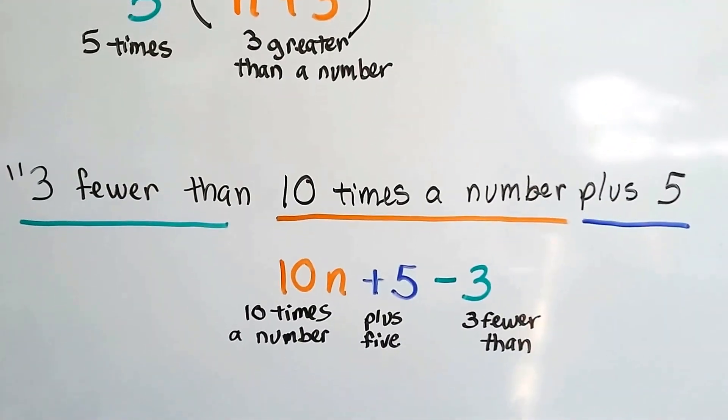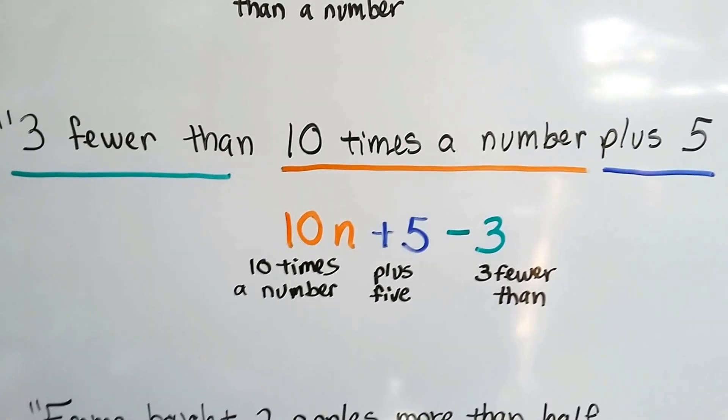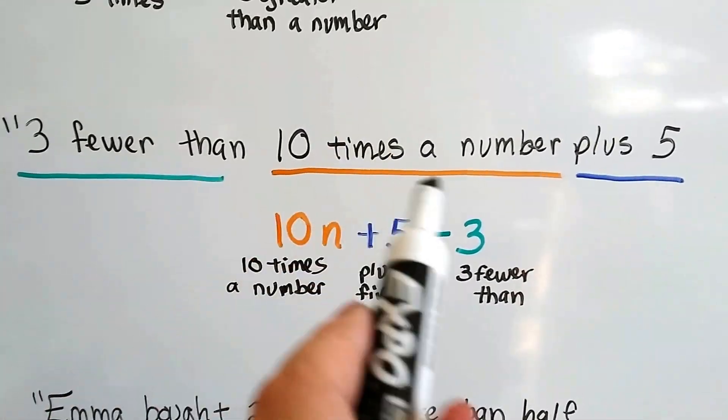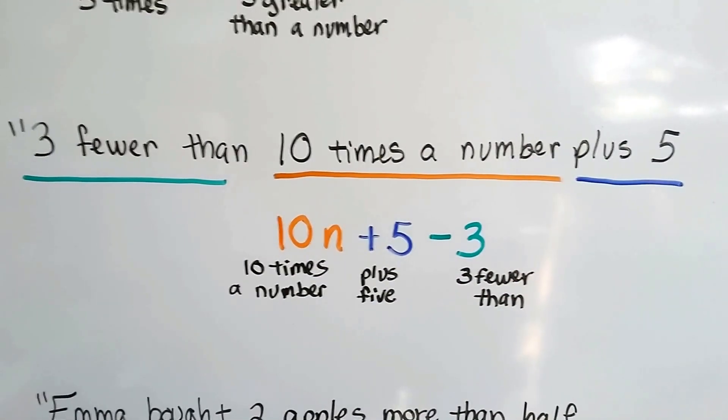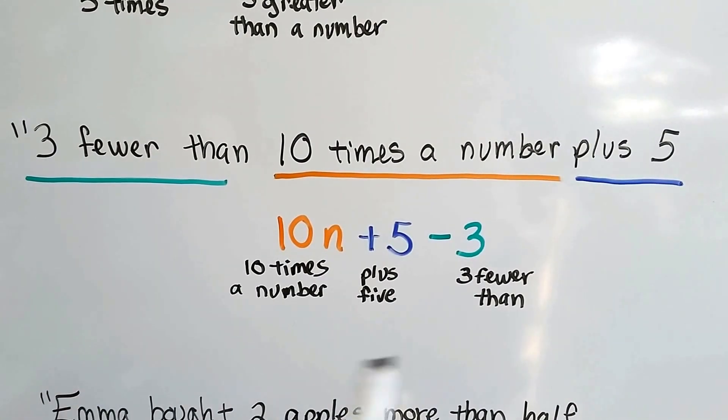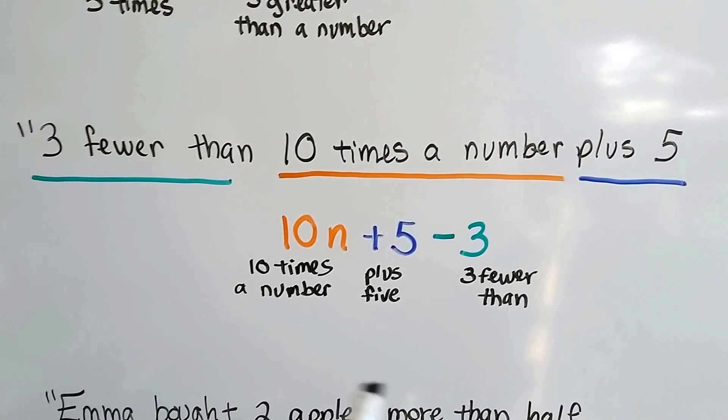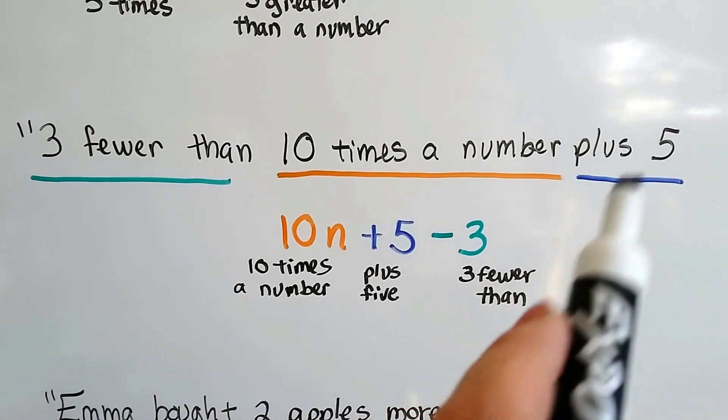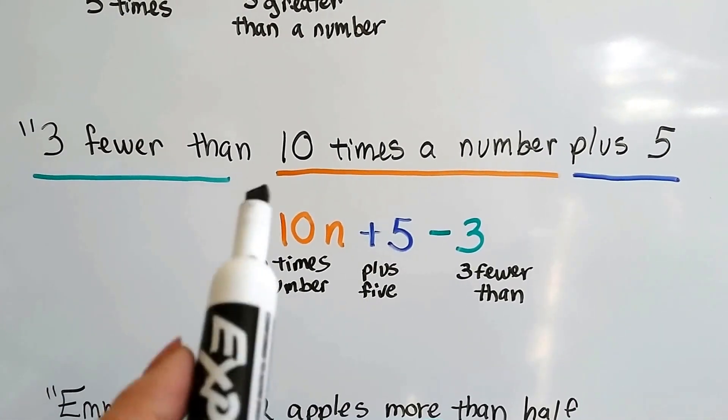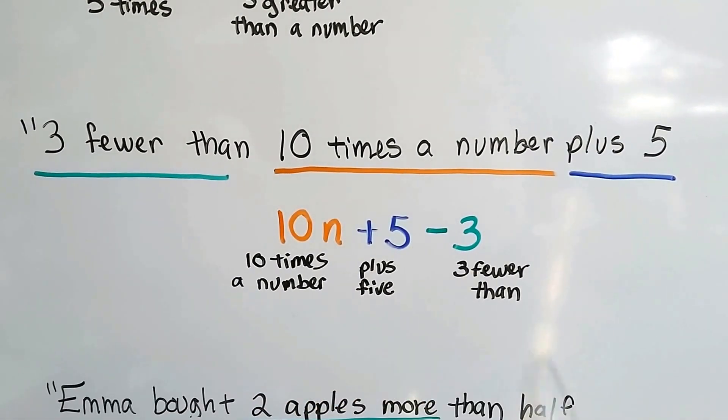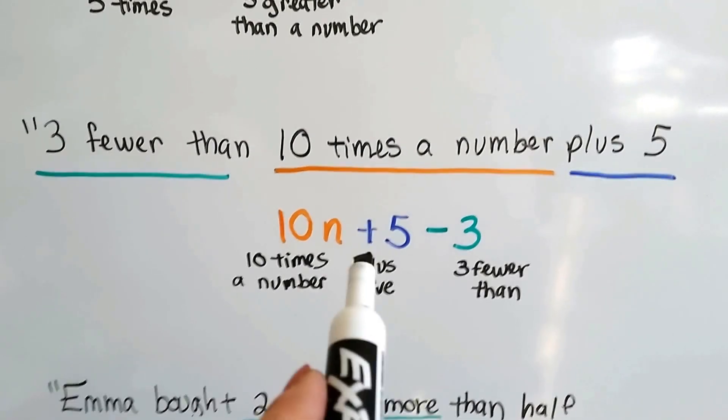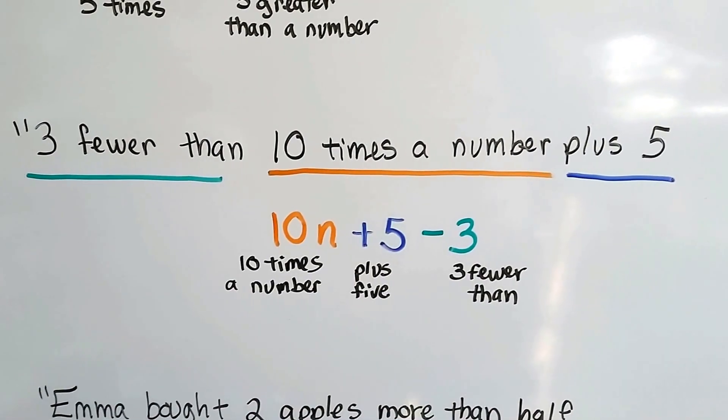If it says three fewer than ten times a number plus five, now it can be split into three parts. We've got three fewer than, so that's going to be subtracting three. Ten times a number would be ten n, and the plus five would be the plus five. So we'd have ten n plus five minus three. We could combine like terms here and make it just a plus two.